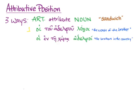We also had an example with a prepositional phrase to specify which brothers: hoi en te hora adelphoi. So en te hora, the prepositional phrase, is sandwiched in between the article and the noun, and so in attributive position, and that means 'the brothers in the country,' telling us which brothers we're talking about.